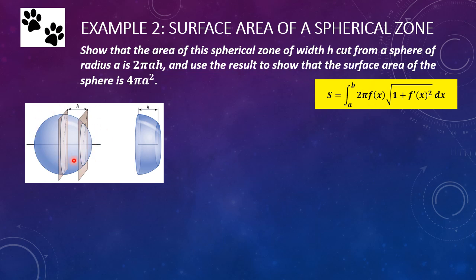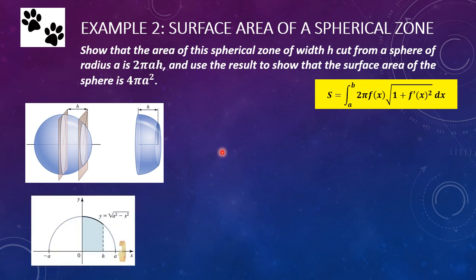Our main object is a sphere. A sphere is created by revolving a circle around the x-axis. So we can figure out the formula f of x by figuring out what the formula is for a circle. The formula for a circle is x squared plus y squared equals the radius squared. We really only need the formula for a semicircle, because if we revolve a semicircle around the x-axis we're going to get a sphere. So instead of using y equals plus and minus the square root of a squared minus x squared, we can just use the positive value — where that formula occurs in quadrant one and quadrant two.